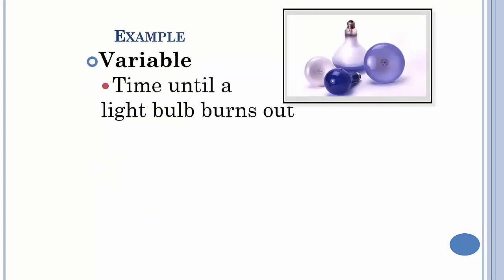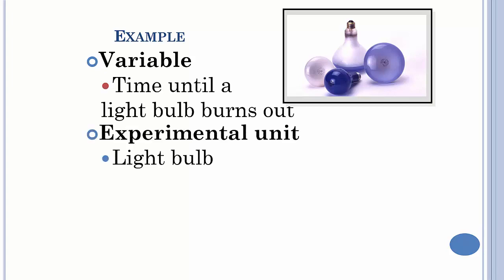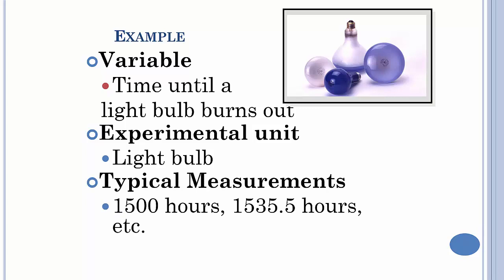Another example: your variable would be the time until a light bulb burns out, so your experimental unit is just the light bulb. Typical measurements would be in hours, so there would be those numbers.